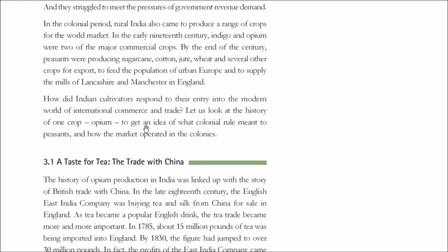How did Indian cultivators respond when modern international trade and export took place? We will explore this with the example of one crop — opium — focusing on the Bengal area and how opium came into the picture.